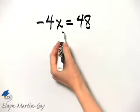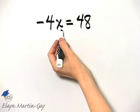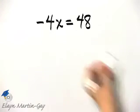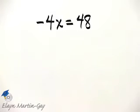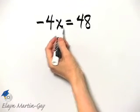To do so, we use properties of equality to allow us to write simpler equations. For example, I have negative 4X is equal to 48. This is negative 4 times X.